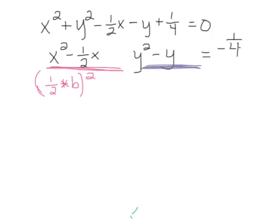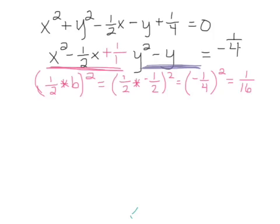So for our x values, our linear term is negative one-half. So we do one-half times a negative one-half, which gives us a negative one-fourth. And when we square this value, we have one over sixteen. So we add this result to both sides of our equation.